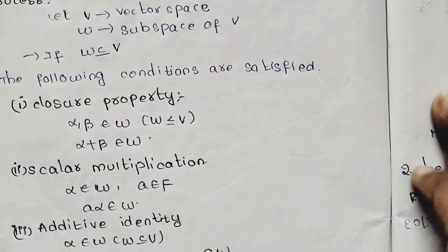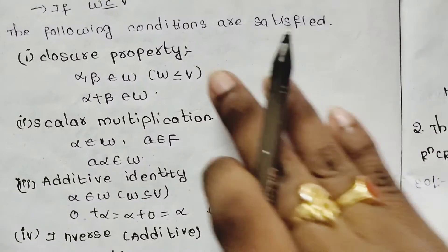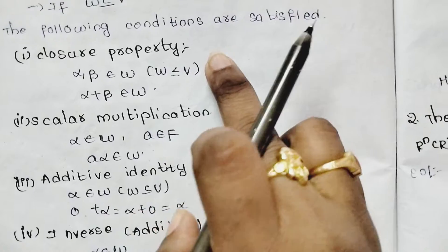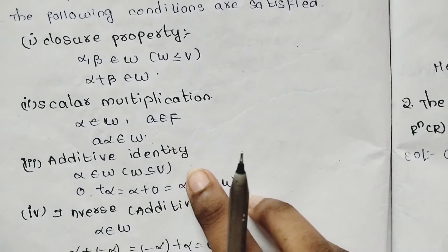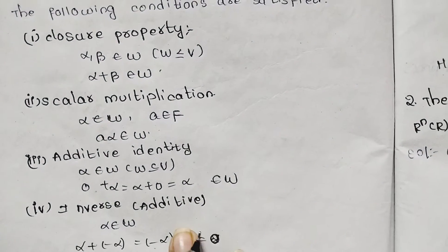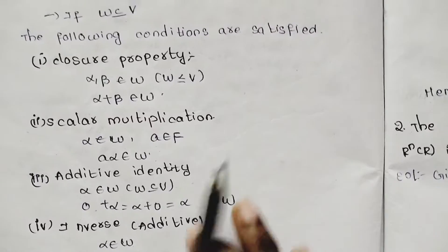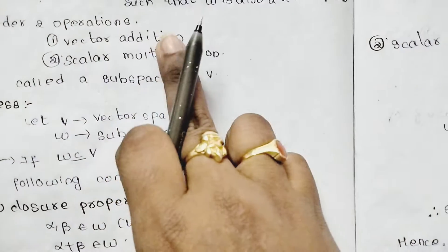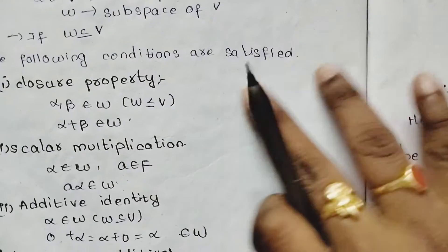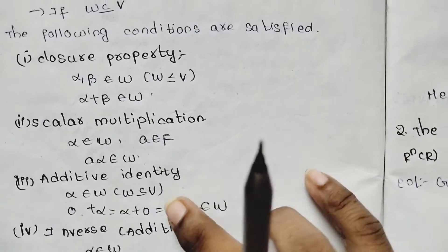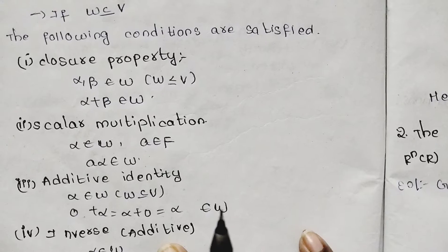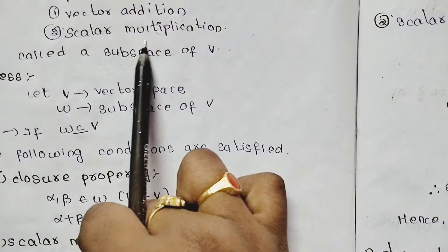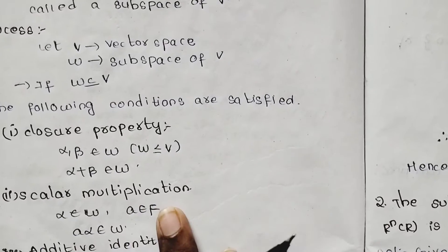The first condition is closure property under addition. The second is additive identity and inverse under addition. We have already discussed vector addition — closure, additive identity, inverse identity — and these are satisfied. And scalar multiplication should also be satisfied.